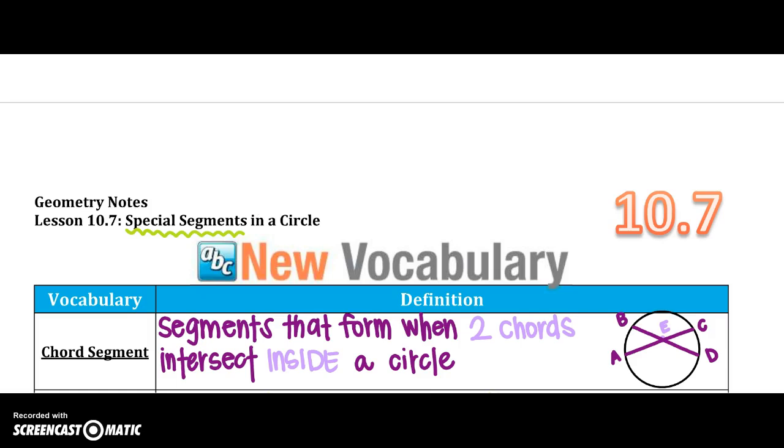So the first one, a chord segment, is a segment that is formed when two chords intersect inside. So when two chords, BD, intersect AC, I have four segments, chord segments, so I would say BE is one.